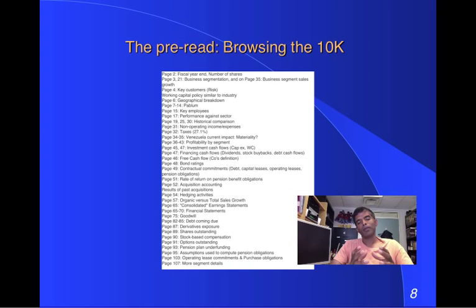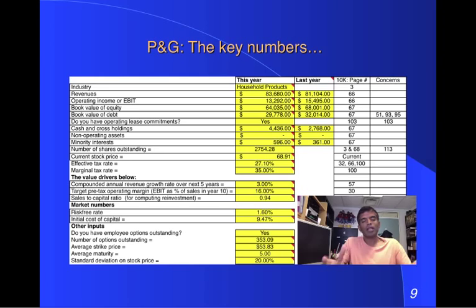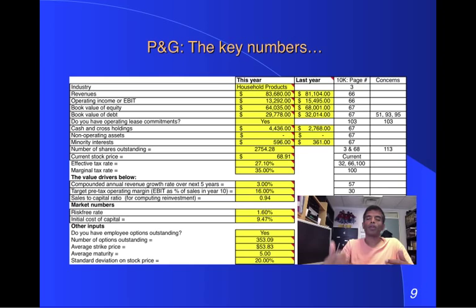I'd like to show you my Excel spreadsheet for Procter & Gamble. Everything I look for goes into a valuation, and this is my standard spreadsheet to value almost any company. I'll take you item by item through the spreadsheet and talk about where I found the information to complete it. Let's start at the top — what industry is Procter & Gamble in? On page 3, they give you a breakdown of their businesses, and they extend it out on other pages.